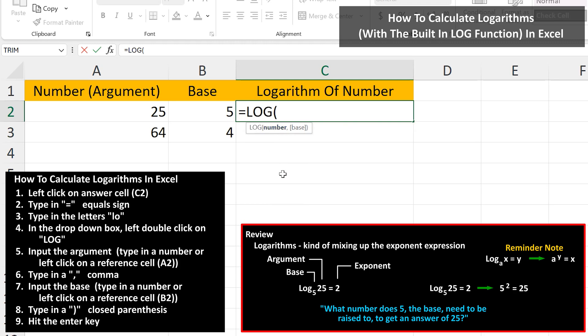Next, we need to input the argument, so left-click on cell A2. And next, we type in a comma. Now we need to input the base, so left-click on cell B2.